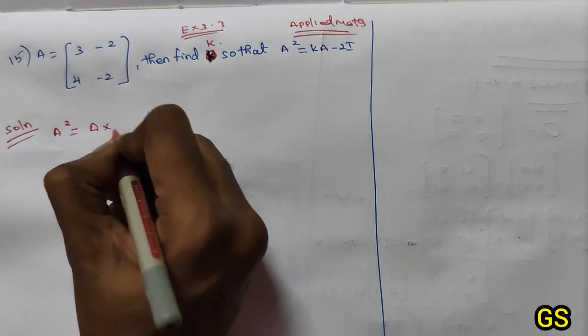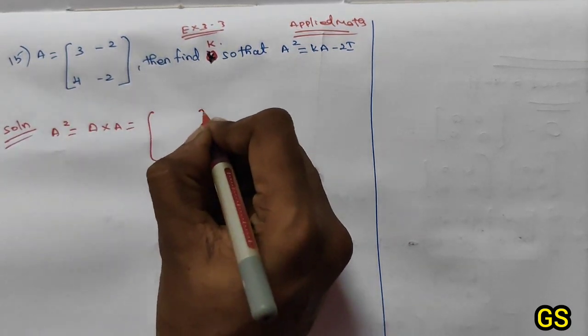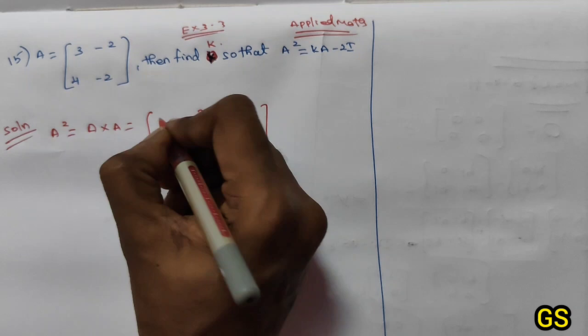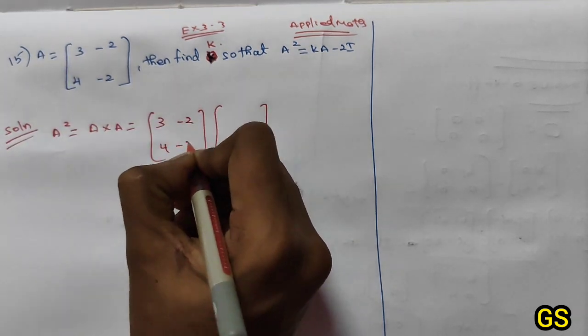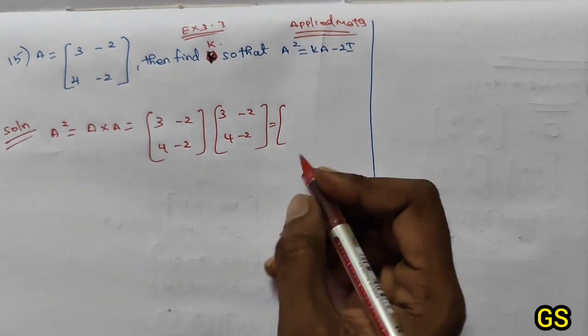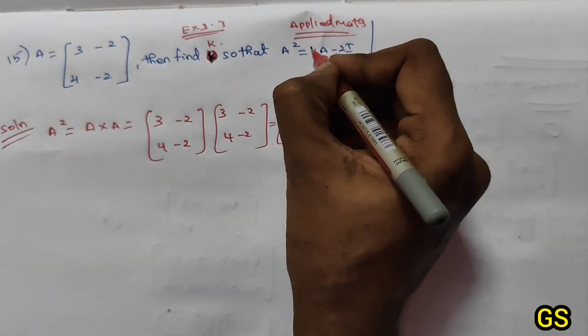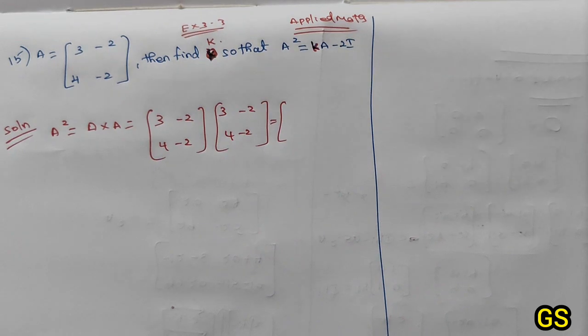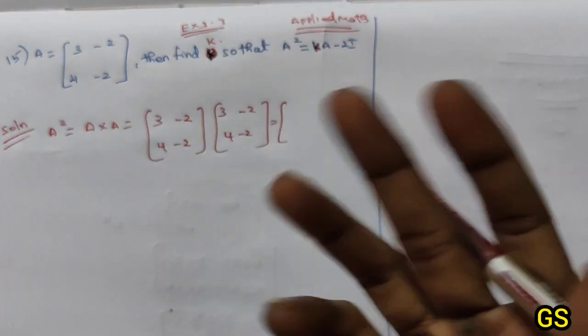A squared equals A into A. So A matrix into A matrix: [3, -2; 4, -2] times [3, -2; 4, -2]. k is a constant number.